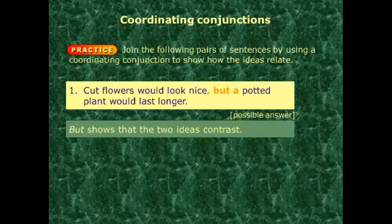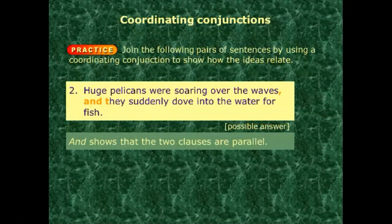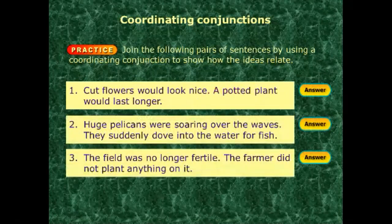Why do we choose 'but' here? What is the relationship between the two independent clauses — 'Cut flowers would look nice' and 'a potted plant would last longer'? The relationship is contrast. When we have contrast between two independent clauses, we use 'but' or 'yet.' The second example is now finished.